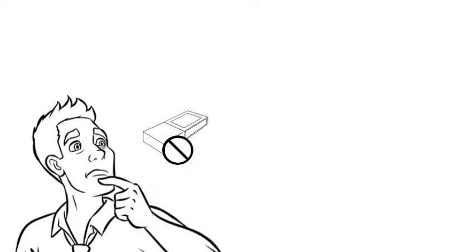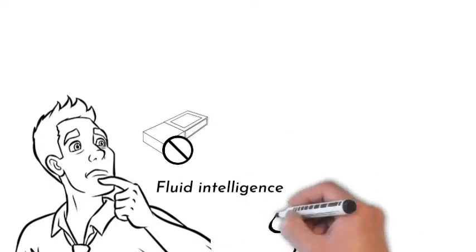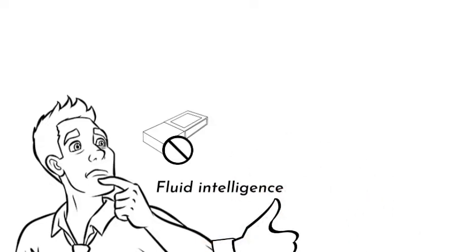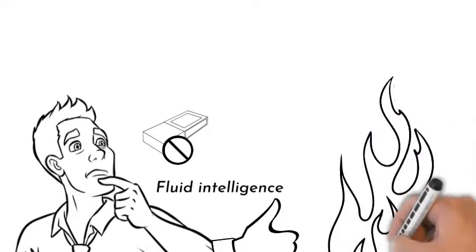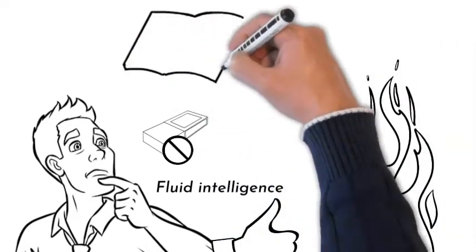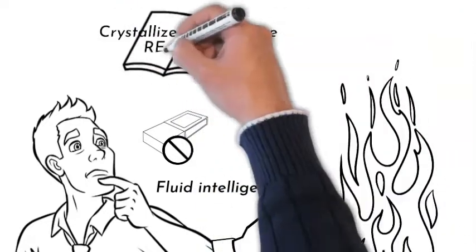Thankfully, his fluid intelligence took over and found a new way to solve the problem, using the flint and steel to start a fire. The crystallized intelligence then records the information for later use.